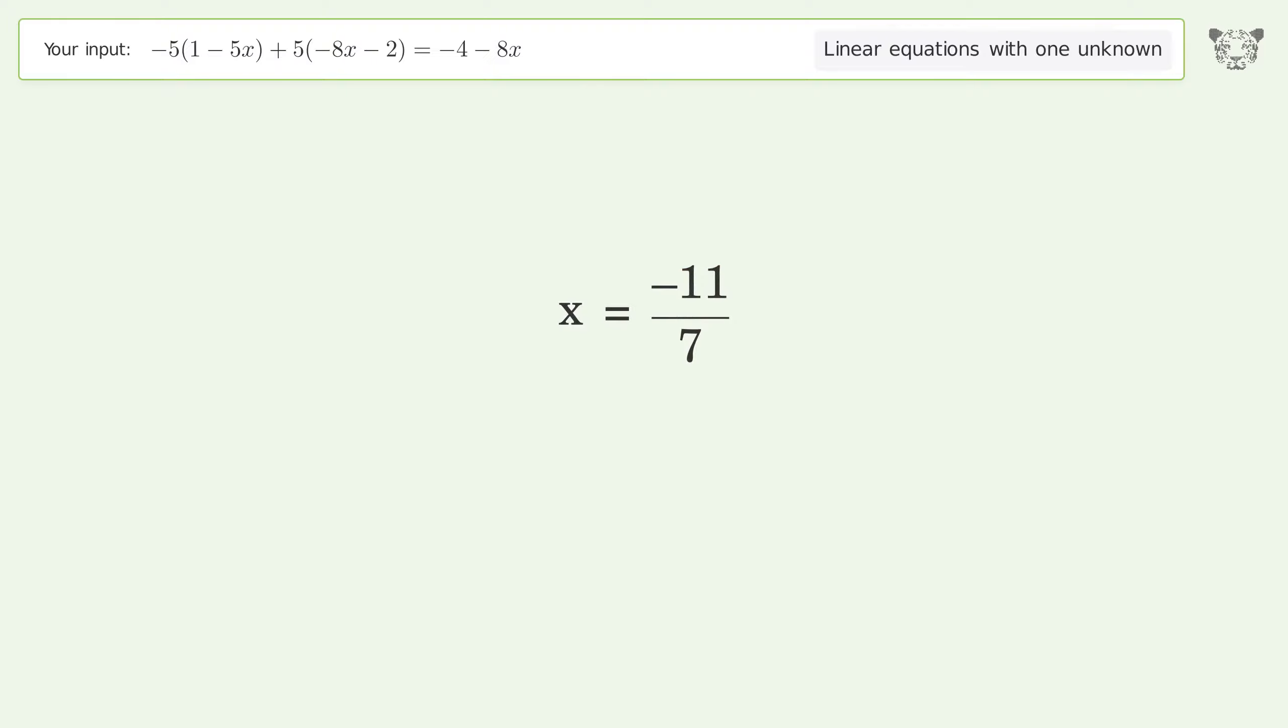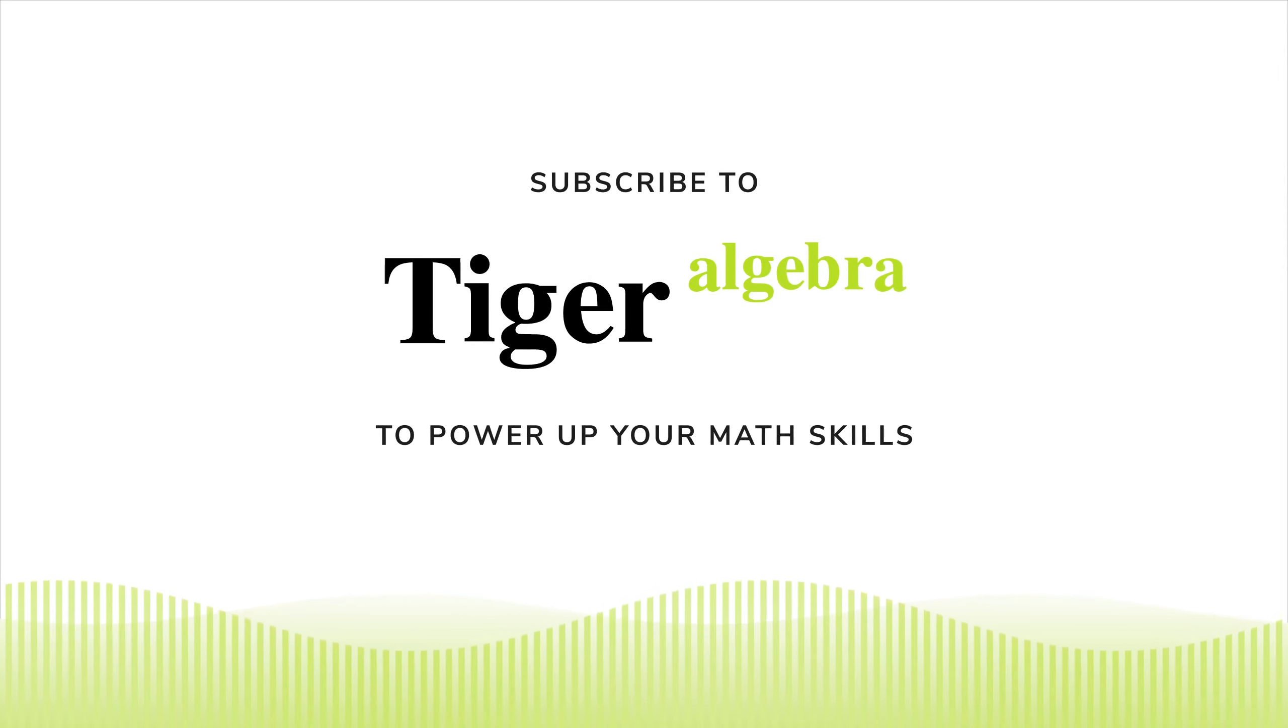And so the final result is x equals negative 11 over 7.